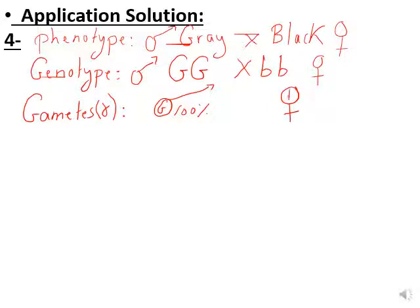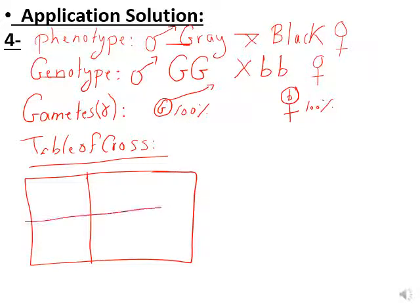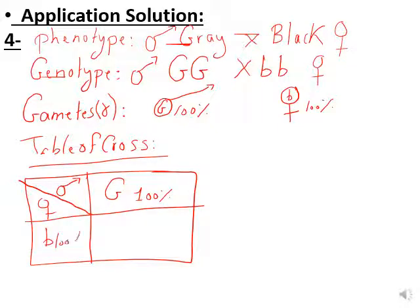If working with proportion instead of percentage, 100% becomes 1. Now the table of cross (Punnett square): draw the table using a pencil and ruler, dividing it for male and female gametes. The male has G at 100% and the female has b at 100%. G times b gives Gb — since G is dominant, we write Gb. 100 times 100 divided by 100 gives 100%.